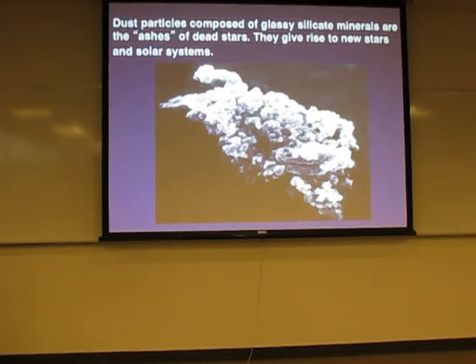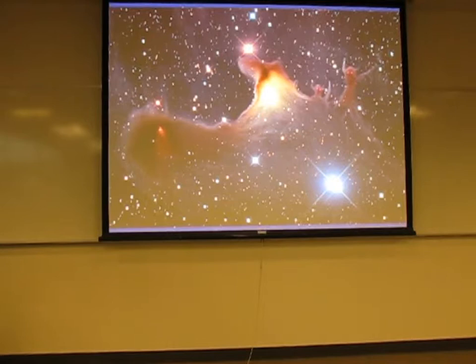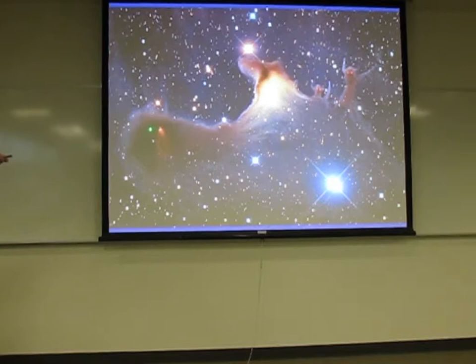This is called the Goblin Nebula. Here's another new star — this is what our sun looked like before it became a solar system. It starts in a cloud of dust and gas; the sun grabs some of that, starts its fusion engines, and then the surrounding dust turns into planets. That's really how it looks.